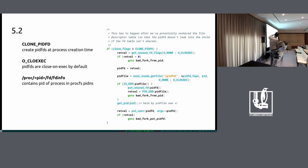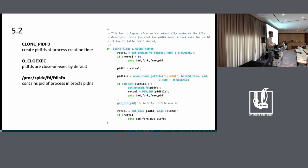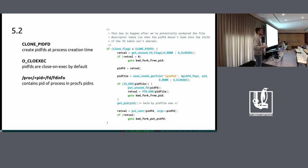That's the core code in fork.c that creates a PIDFD. You specify a flag at process creation time, then allocate a file, stash a reference to struct pid of the process you just created in there, and then you have a stable process handle. We used the last available flag from clone. When clone PIDFD landed, clone was saturated - there are unused flags that the kernel ignores, but we can't safely reuse them. For example, glibc and musl still pass CLONE_DETACHED, which has been ignored since kernel 2.6.